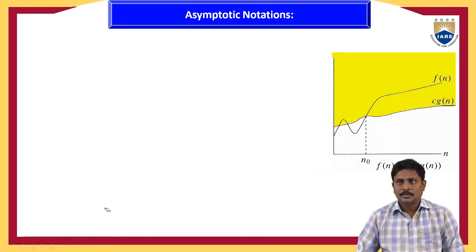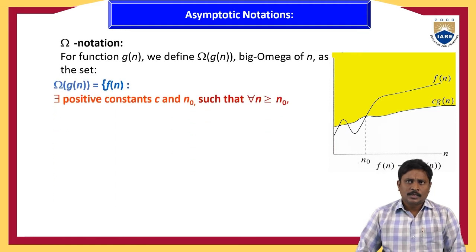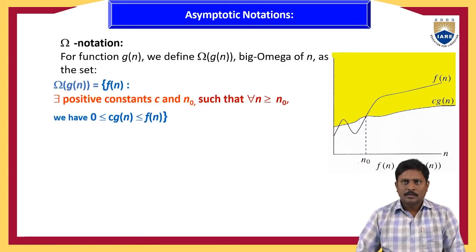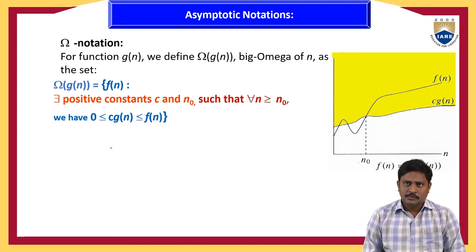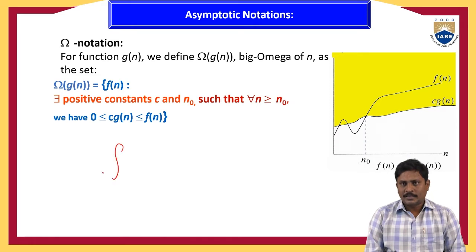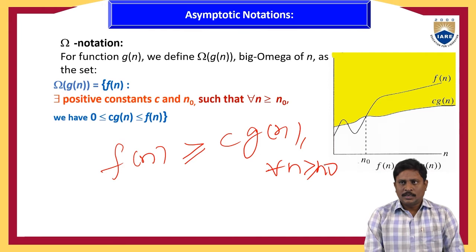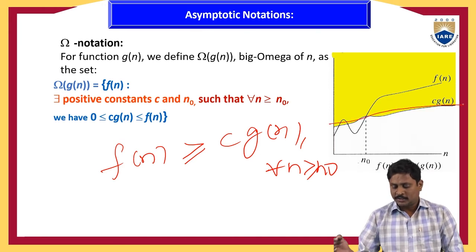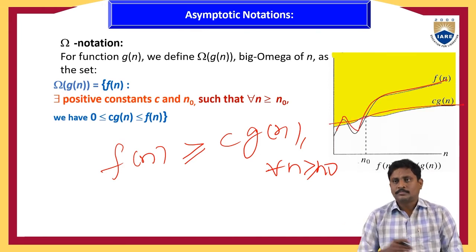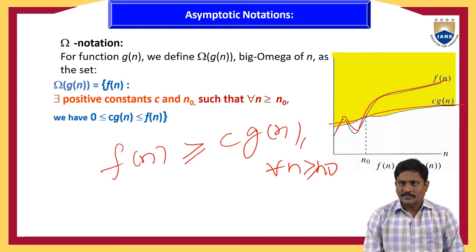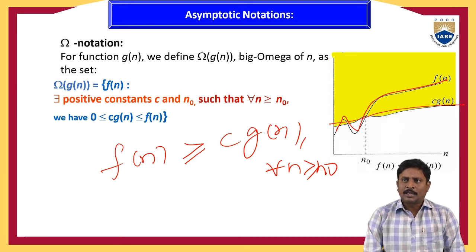Next is omega notation. In omega notation, f(n) is the given function and g(n) is the bounding function. Here f(n) is always greater than or equal to c·g(n) for all n ≥ n₀. The rate of growth of f(n) is always greater than or equal to g(n).